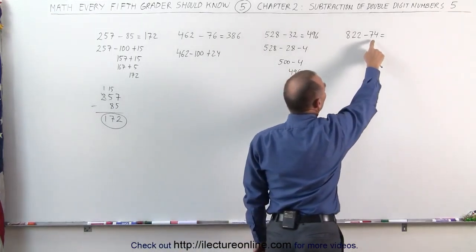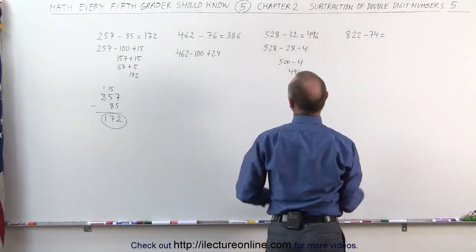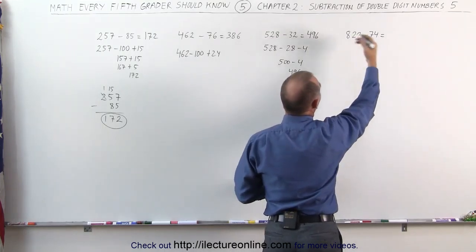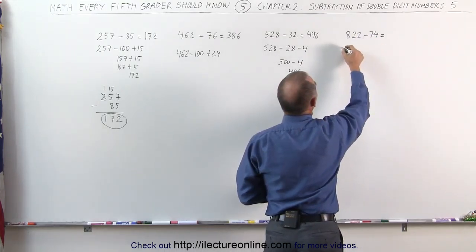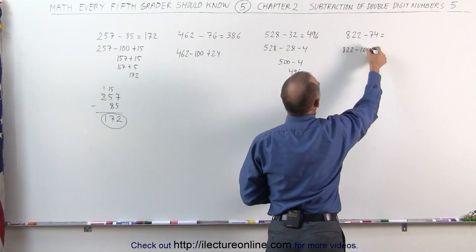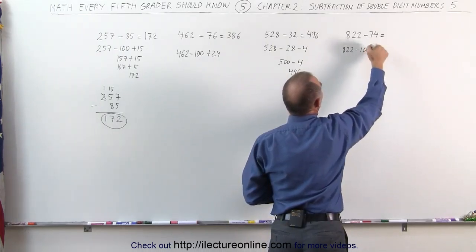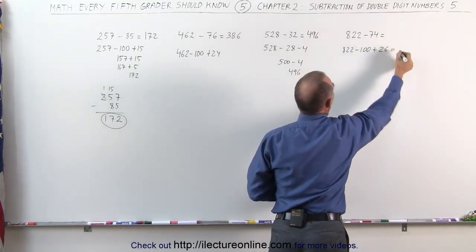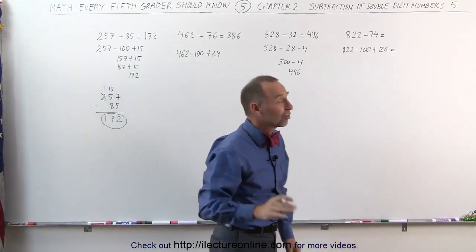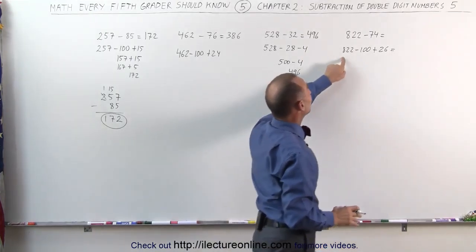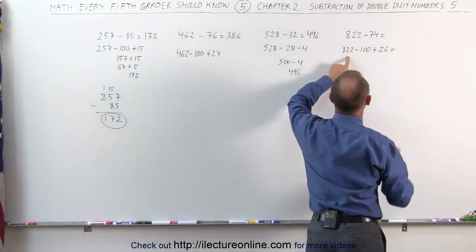But if the number is big like this, close to 100, then again I use a technique where I subtract 100 from it, and then add the difference later. 822 minus 100 plus, the difference here is 26, so I add another 26 to it, because I subtracted 26 more than I should have. 822 minus 100 is 722.